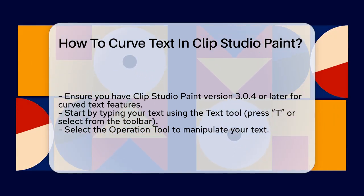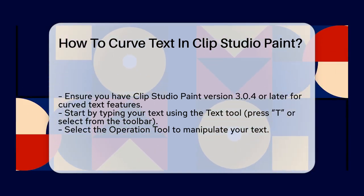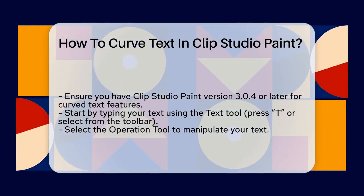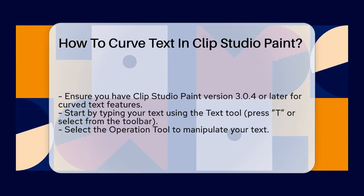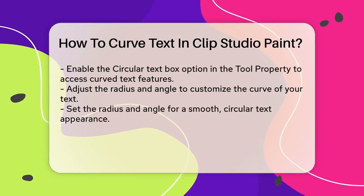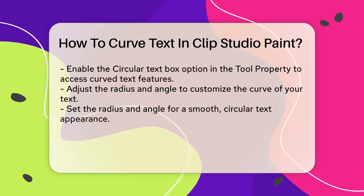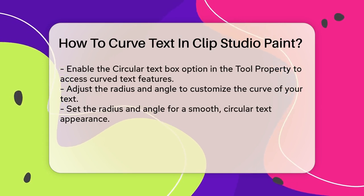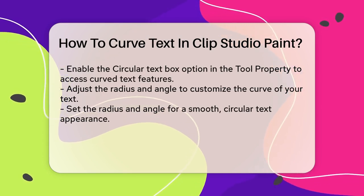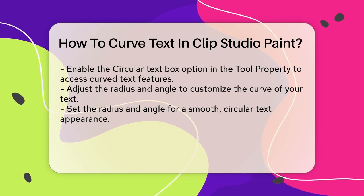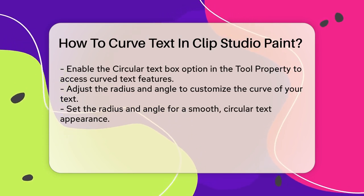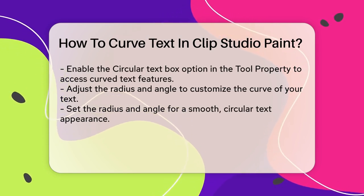Type out your text using the Text tool. This is as simple as pressing the T button on your keyboard or selecting the Text tool from the toolbar. Next, click on the Operation tool. This tool allows you to manipulate your text in various ways. Under the Tool property, you'll see an option for a circular text box. Tick this box to enable the Curved Text feature.